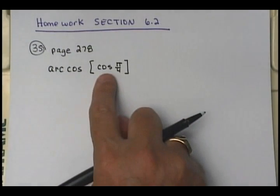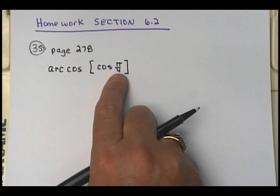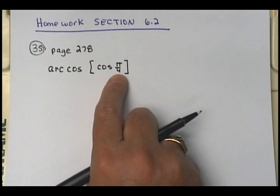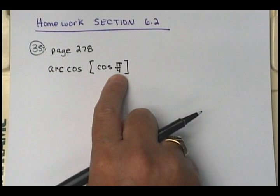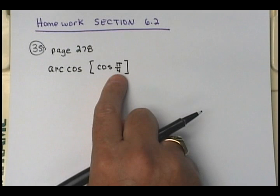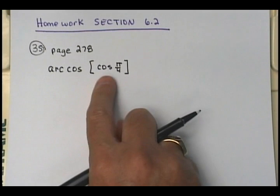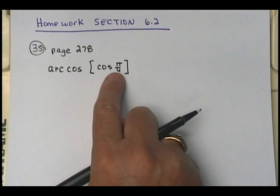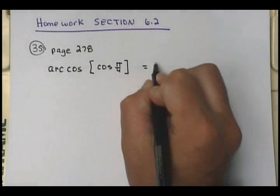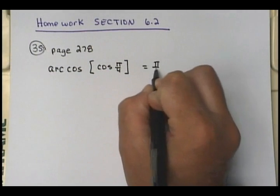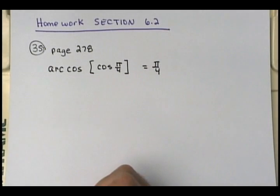For example, if this had been arc cosine of cosine at five pi fourths, your answer is not five pi fourths. You've got to find that restriction between zero and pi. This one's easy enough — we know that pi fourths is between zero and pi, so this would just be pi fourths.